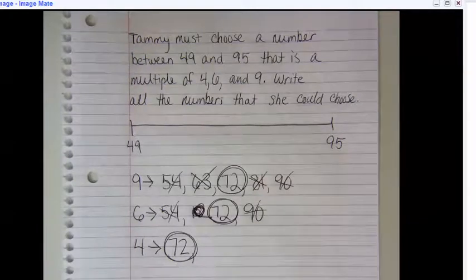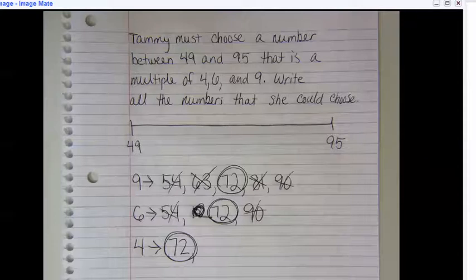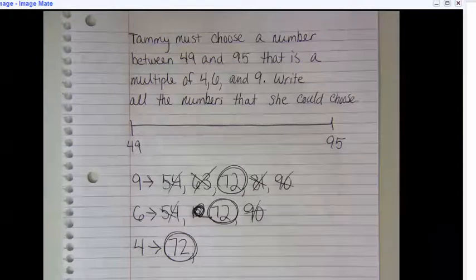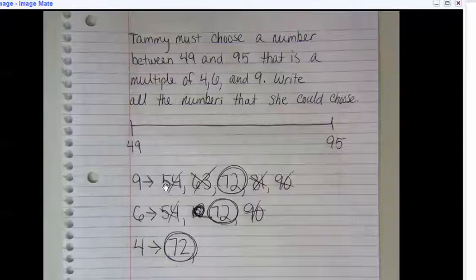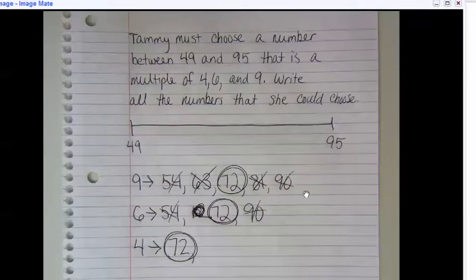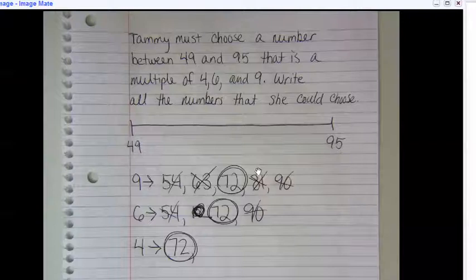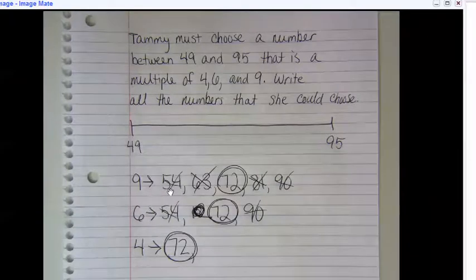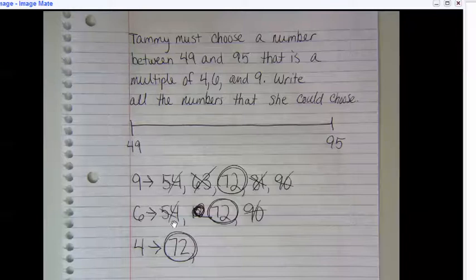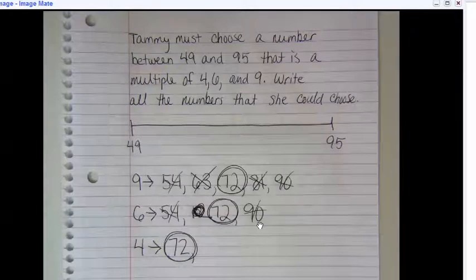is 12, so that works. 81 divided by six gives me a decimal, so that doesn't work. But 90 divided by six is 15, so that works. So in my nine row, I crossed off 63 because it didn't work for six, and 81 because it didn't work for six. But 54, 72, and 90 all worked, so they weren't crossed off.